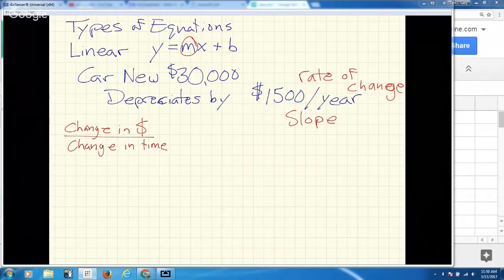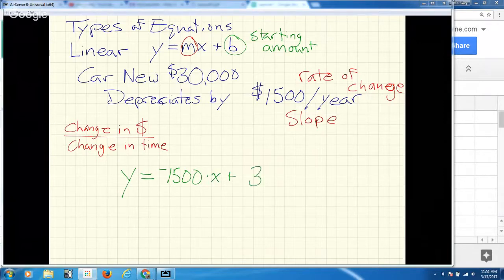The b always represents our starting amount. Sometimes linear equations increase, sometimes like this one they decrease. So for this one right here, if I wrote it in terms of y, my slope is a negative $1,500 times x plus the starting amount, $30,000. It's always a good idea to state what each variable means. In this case, y is the value of the car, and x would be time in years.